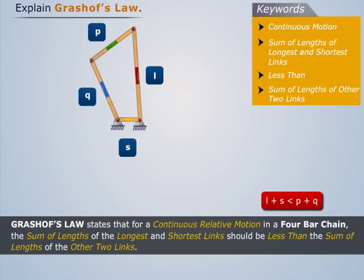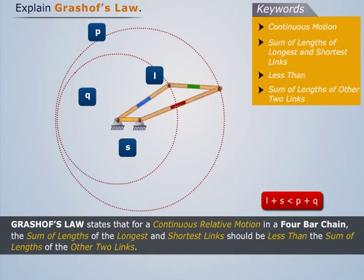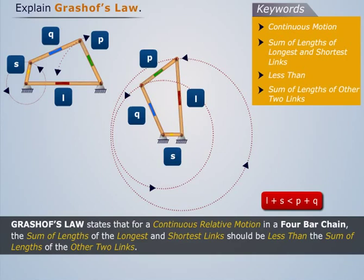Now if we fix link S, then both the adjacent links Q and L rotate completely. Thus we see that fixing any of the four links, the chain executes continuous relative motion.